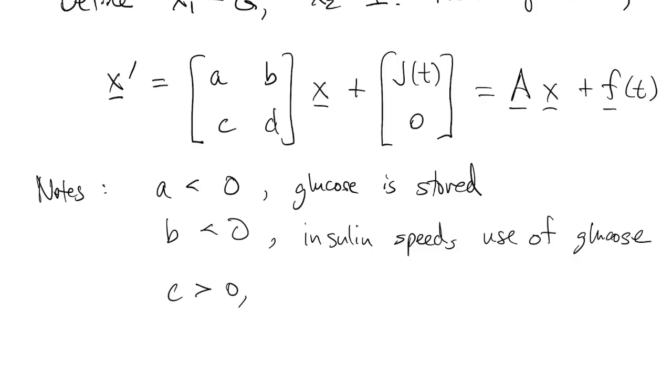On the other hand, C should be positive. That's the influence of glucose on the insulin. The presence of glucose causes the release of insulin. And so that's a positive effect. And then d is the effect of the insulin concentration on itself. So with more present, it gets metabolized more quickly.